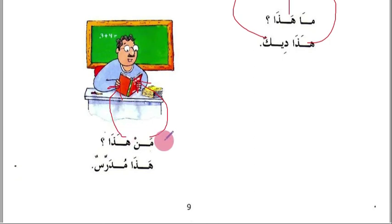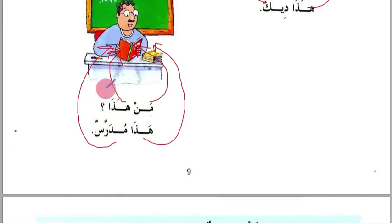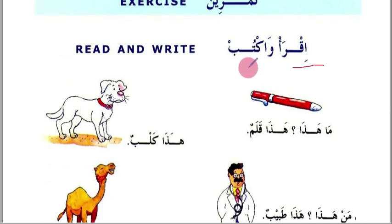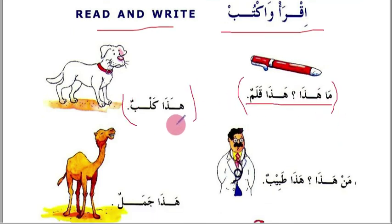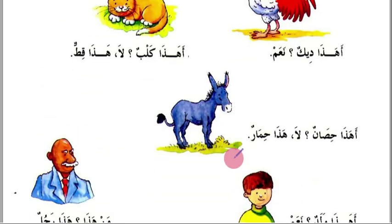'Ma hadha? Hadha deekun' — what is this? This is a rooster. 'Man hadha? Hadha mudarris' — who is this? This is a teacher. Now tamrin — exercise. 'Iqra' wa aktub' means 'read and write'. Translate the sentences: 'ma hadha? Hadha qalamun', 'hadha kalbun', 'man hadha? Tabib', 'hadha jamalun' — translate them into English.